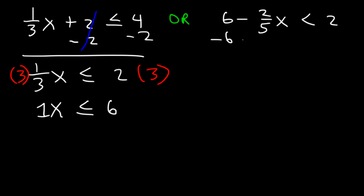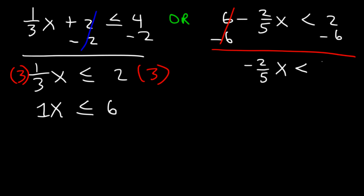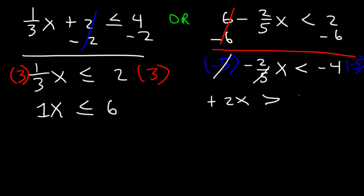For the right side, subtract both sides by 6, giving negative two-fifths x is less than 2 minus 6, which is negative 4. Now multiply both sides by negative 5. Remember, any time you multiply or divide by a negative number, the inequality changes direction. The negatives cancel, giving positive 2x greater than negative 4 times negative 5, which is positive 20. Divide both sides by 2, and x is greater than 10.